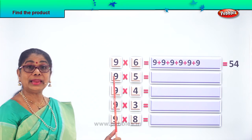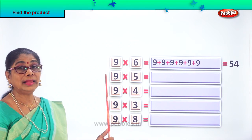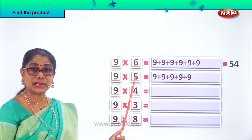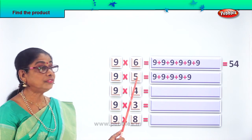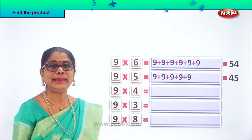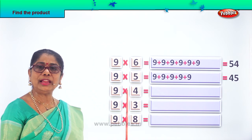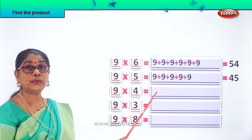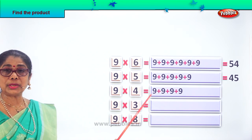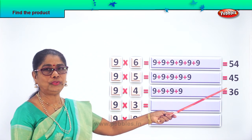The next one — find the product of 9 into 5. 9 fives: write 9 five times — 1, 2, 3, 4, 5. What are 9 fives? 9 fives are 45. Next, find the product of 9 into 4. What are 9 fours? You write using repeated addition 4 times: 9 plus 9 plus 9 plus 9. 9 fours give you the answer equal to 36. 9 fours are 36.